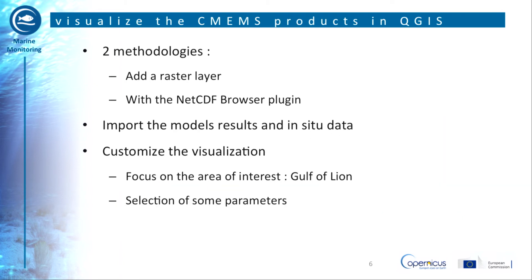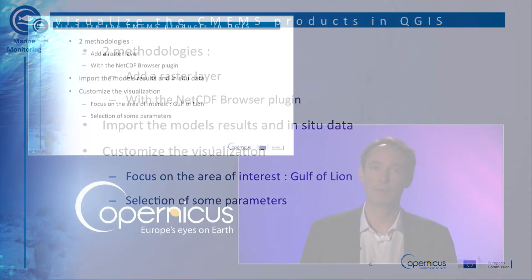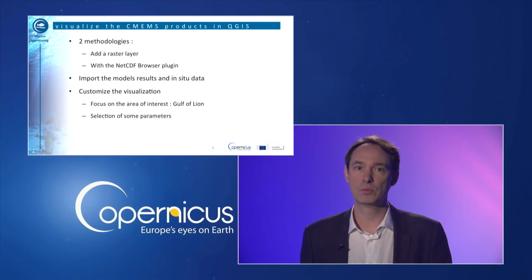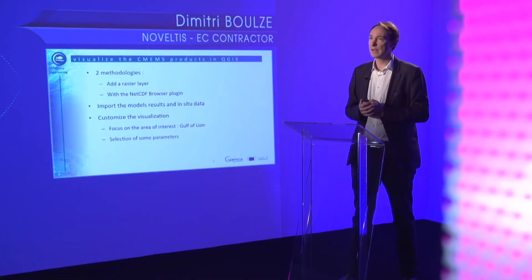To visualize my product in QGIS, I have two methodologies. The first one is to add them as a raster layer, while the second one will use the NetCDF plugin. This way I will import the model results and the in-situ data and tailor them for visualization the way I want, combining it with my wind farm project layer. Thank you for watching this video and I hope it helps.